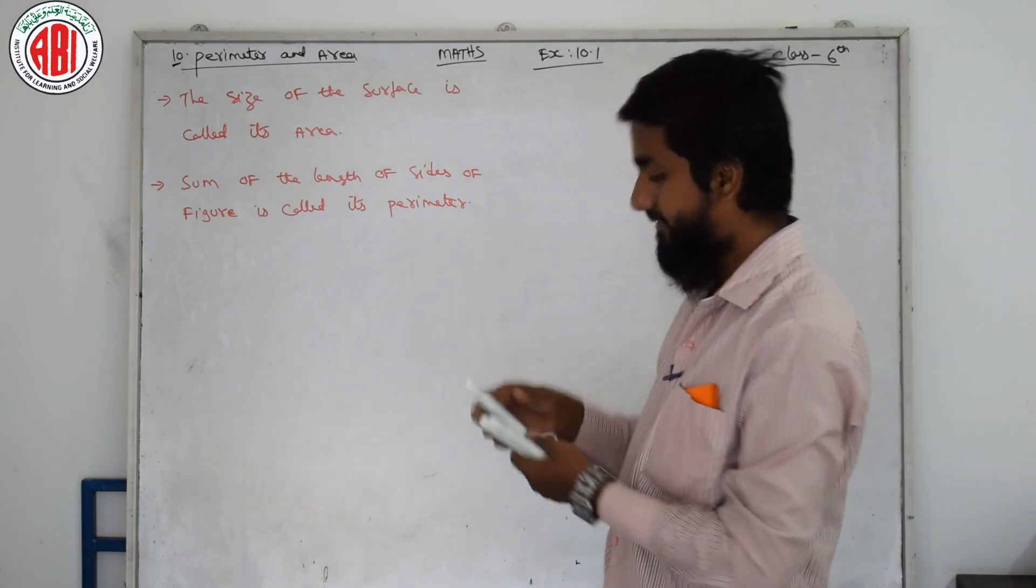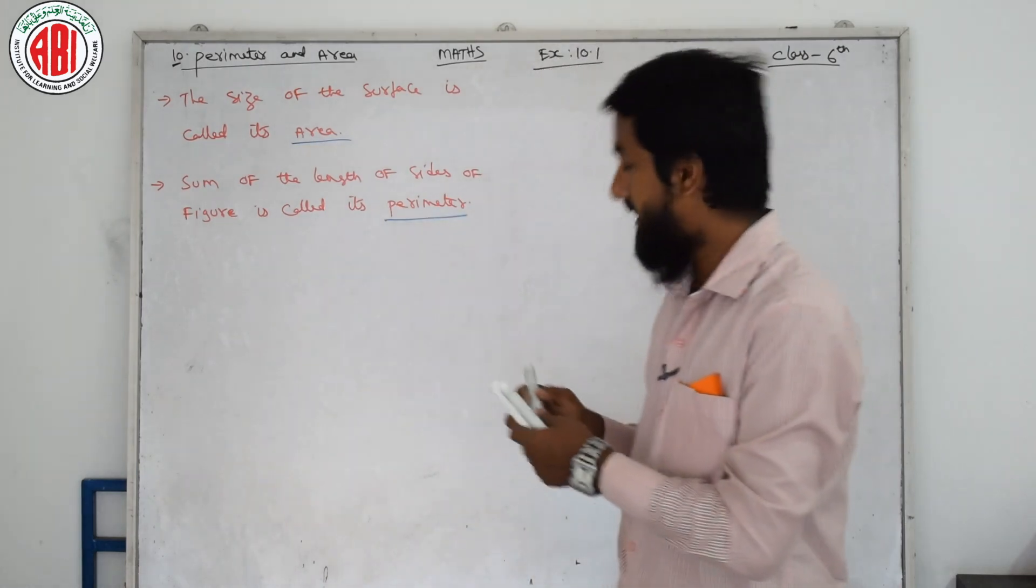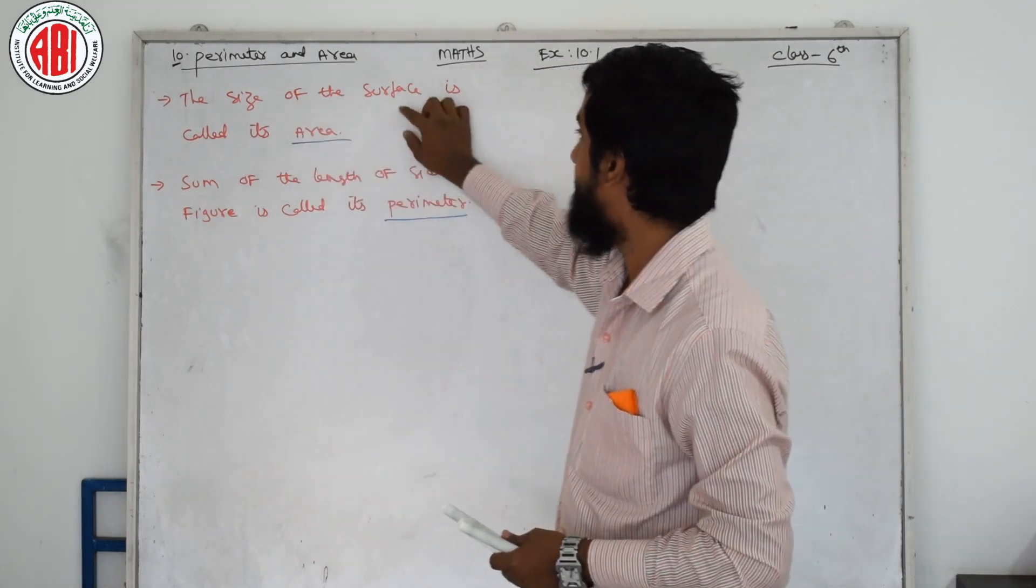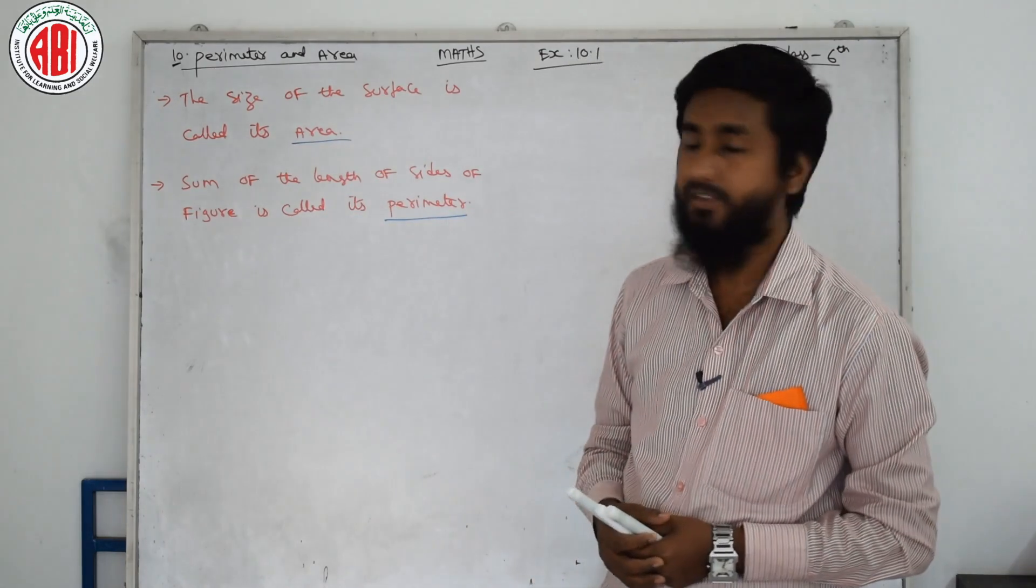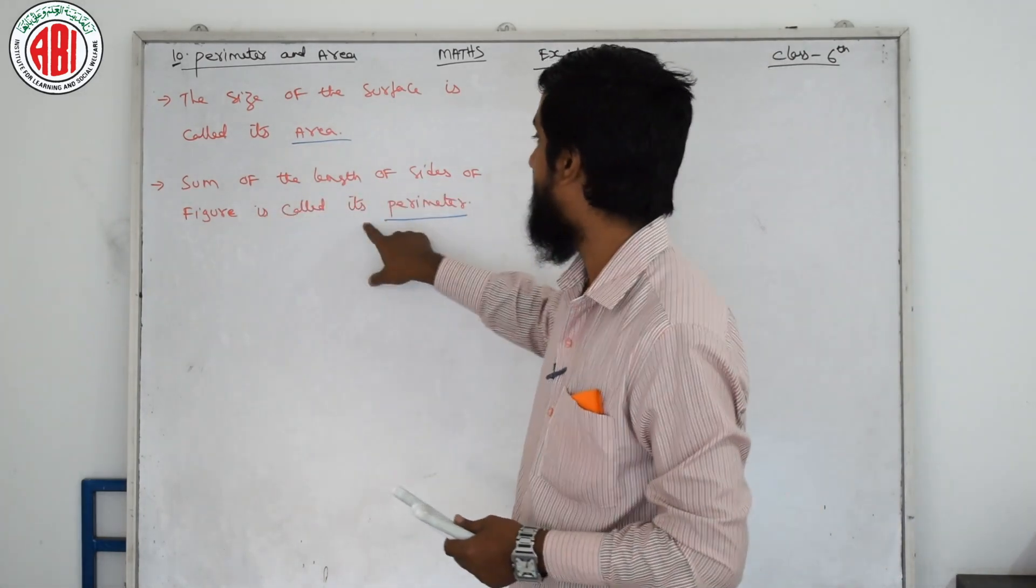As you can see, I already wrote the definition for Area and Perimeter. Area is nothing but the size of the surface is called its Area. Next, sum of the length of sides of the figure is called its Perimeter.